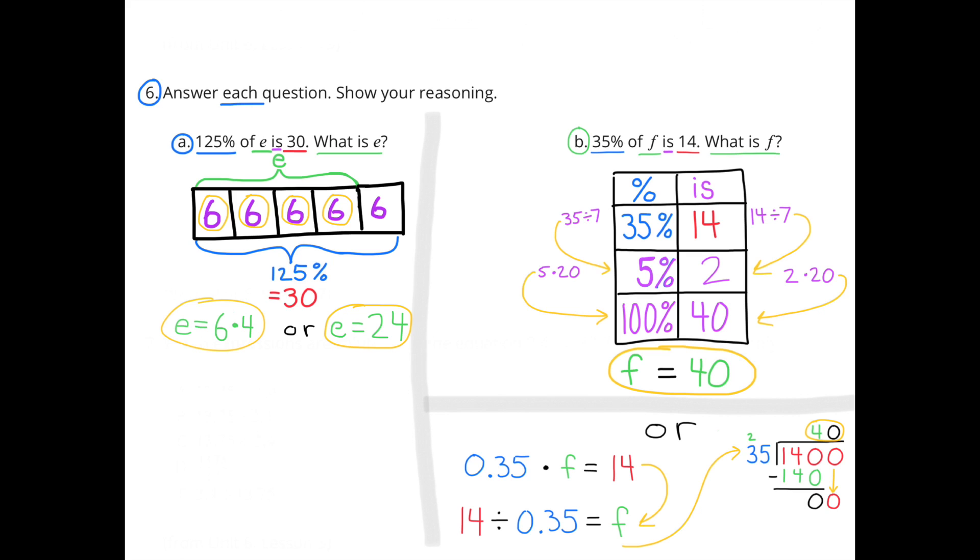So 35% of F is 14. Since we're solving for F, I'd like to find out what 100% of F is. So my challenge is turning 35% into 100%. And I can do that pretty easily by dividing 35% by 7, and then multiplying that answer, 5%, times 20.